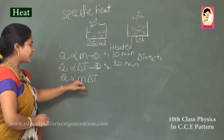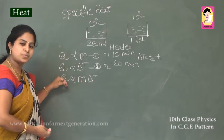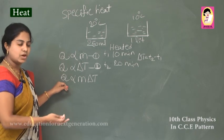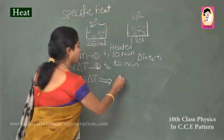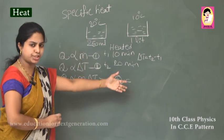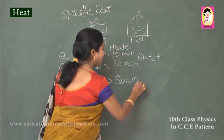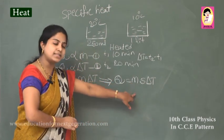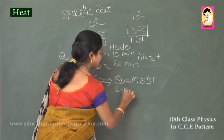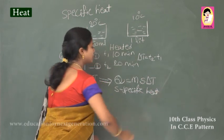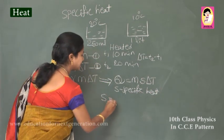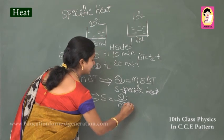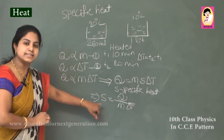Removing the proportionality sign, we introduce a constant s and write the equation as: Q equals m times s times ΔT. Here s is the constant, which is nothing but specific heat. From this equation, specific heat s can be written as: s equals Q divided by m times ΔT.